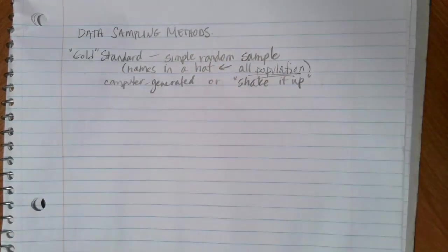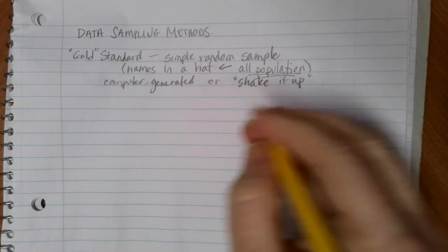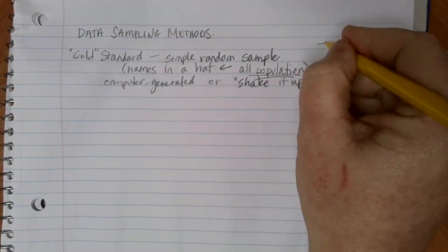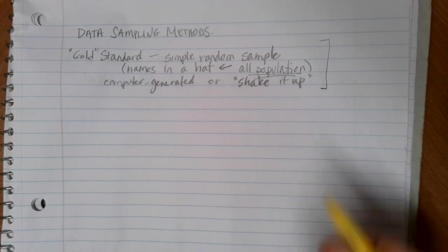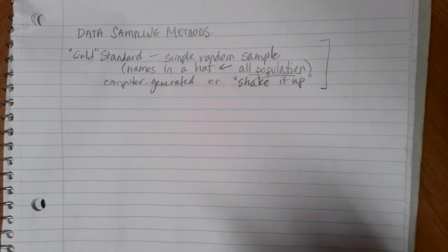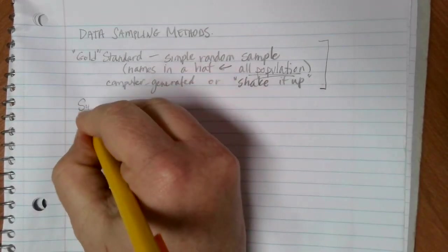Some way that we are dealing with the entire population as we move forward. And sometimes this is a little bit more difficult to do. It's hard to have the entire population at your fingertips. And so another method that we can use is called systematic sampling.